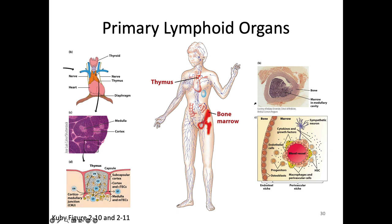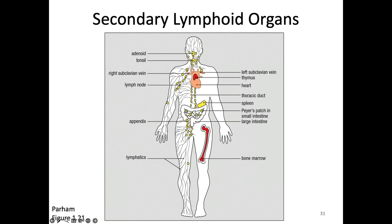The organs that immunologists think about most frequently are the secondary lymphoid organs, shown in yellow. The two most famous are lymph nodes and spleen. There are others — Peyer's patches in the intestine, the appendix, the tonsil, the adenoid — but when I think of a secondary lymphoid organ, I'm usually thinking about the spleen or the lymph node. To understand what's going on with secondary lymphoid organs, I need to tell you a bit of relevant anatomy and physiology.